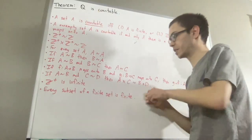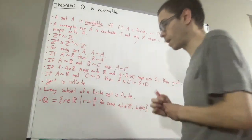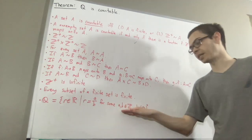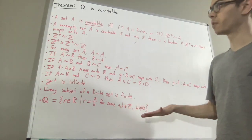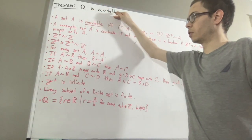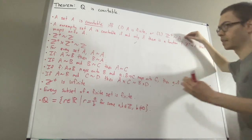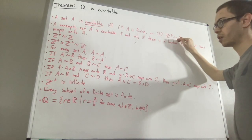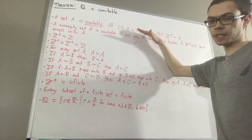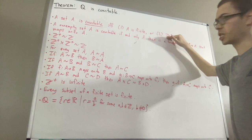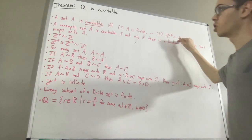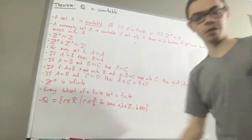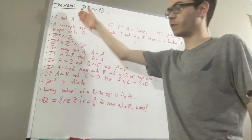The set of rational numbers is the set of real numbers r with the property that r equals a over b for some integers a and b, with b not equal to zero. We are going to prove that the set of rational numbers is countable. We'll also show the set of rational numbers is infinite, so there must be a bijection from the set of positive integers to the set of rational numbers.